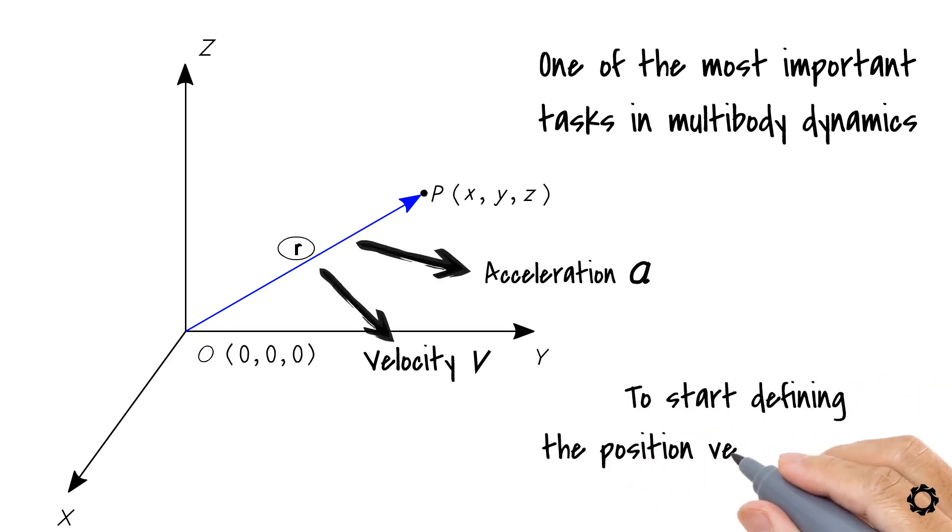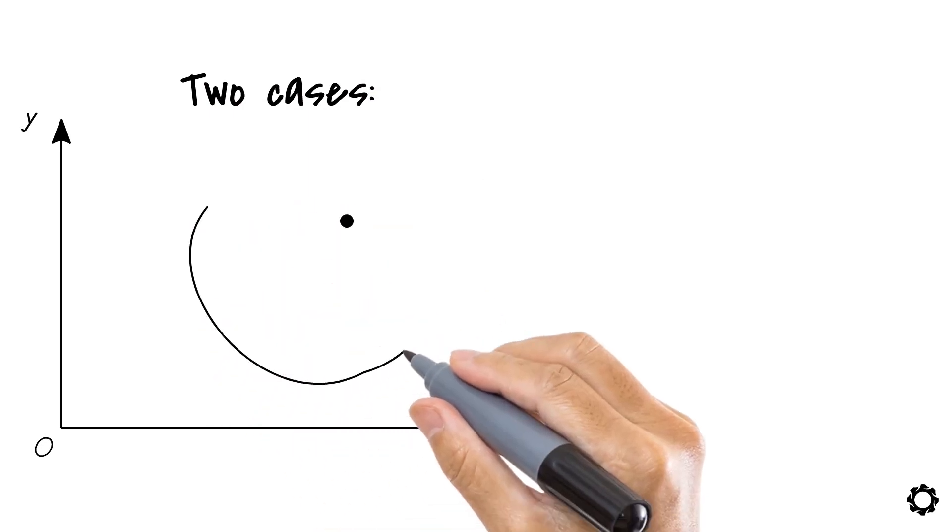To start defining the position vector of a point on a fixed Cartesian reference system, first let's bring a 2D system. Now let's postulate two cases, one where the point, in this case a particle, is floating on the plane, and a second one where the point is a part of a body.